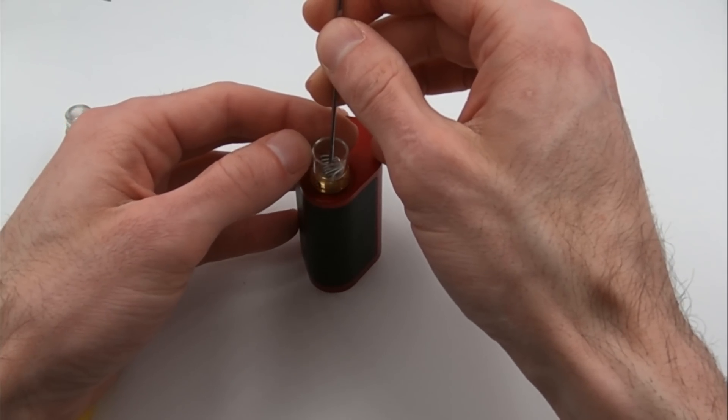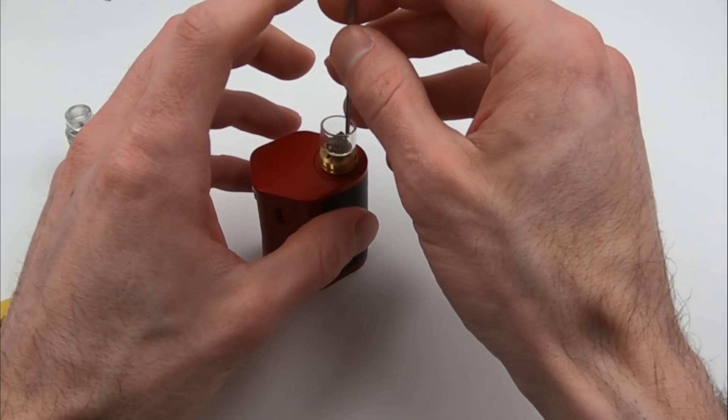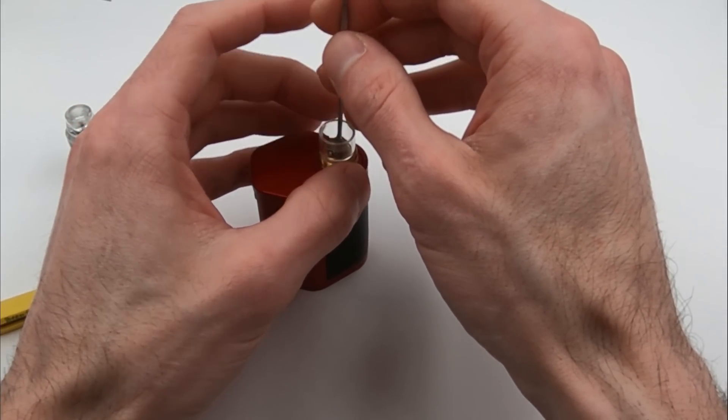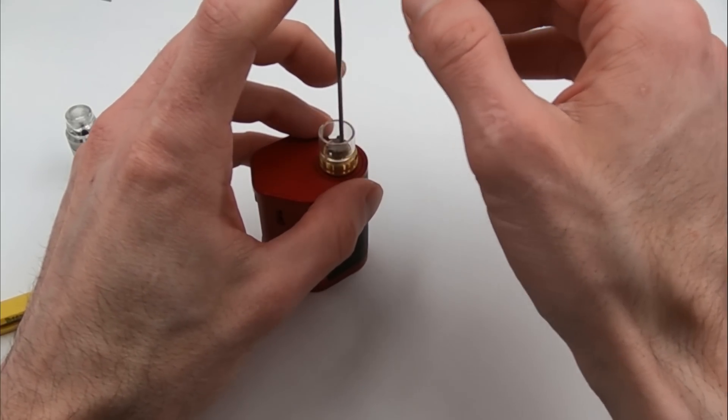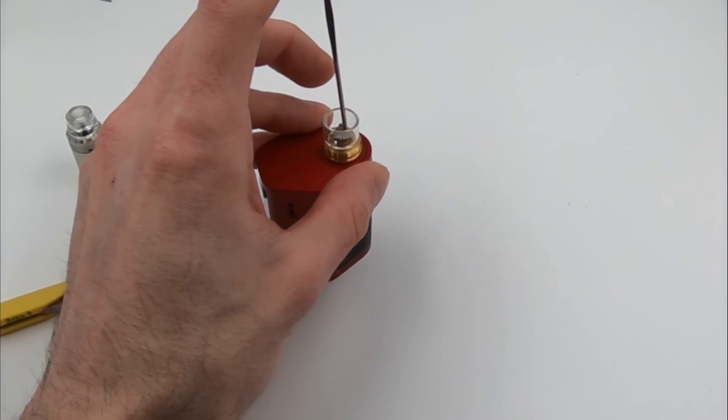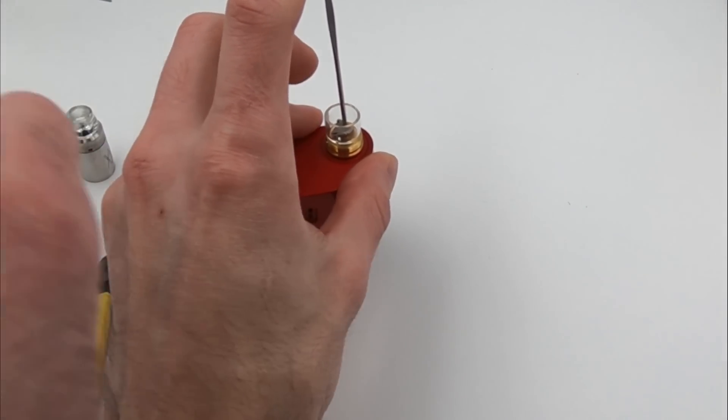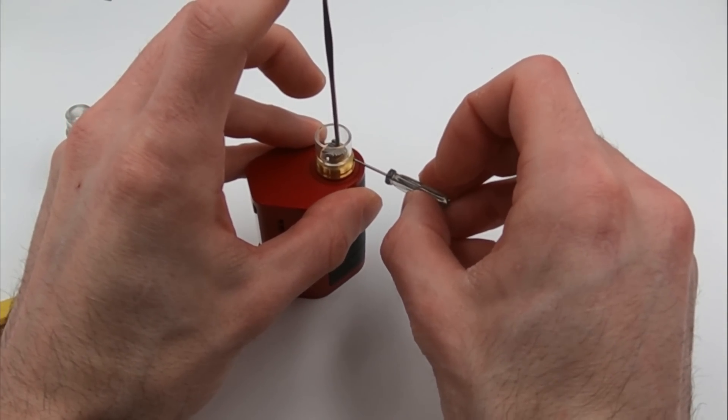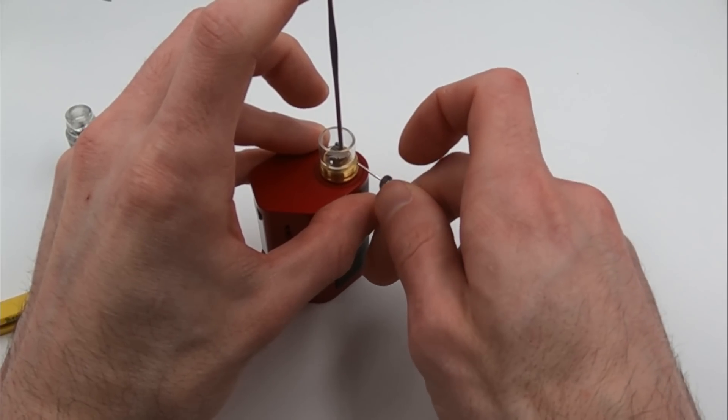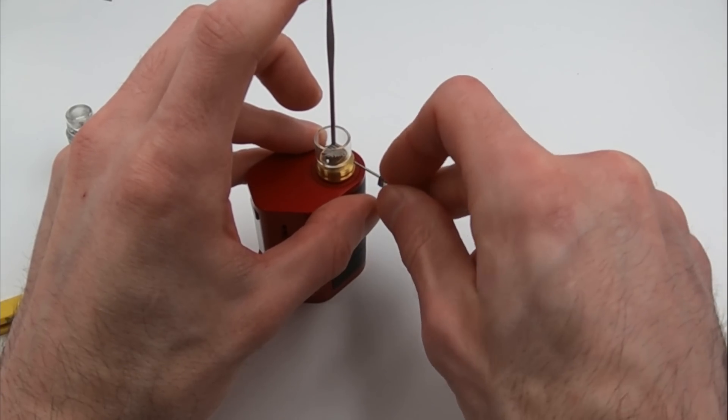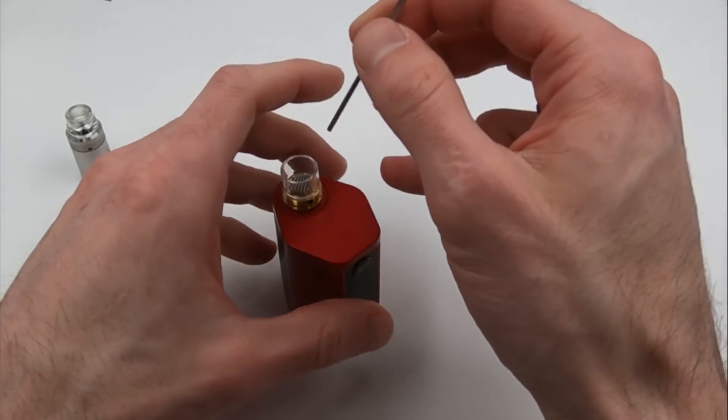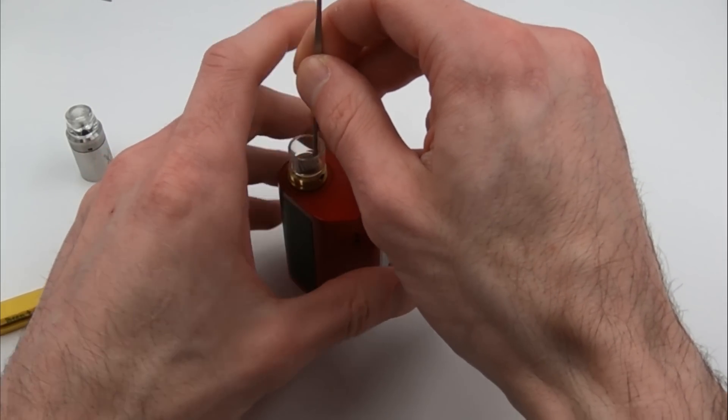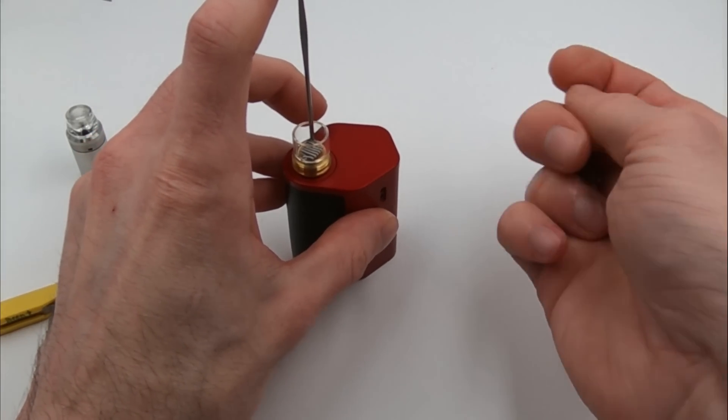It can be helpful to use your dab tool to push down on it while you tighten that side of the coil. I'm not pushing down very hard and I'm not going to tighten this very tight either. I just want to make a secure connection with the coil.